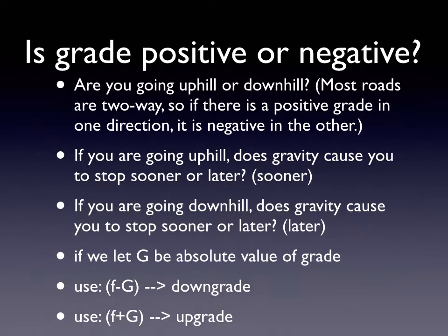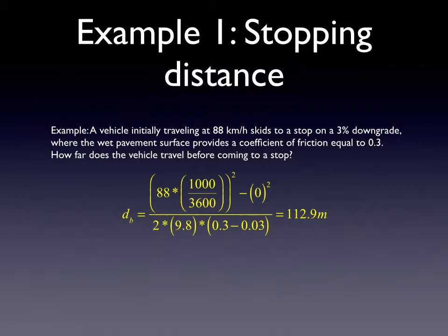We can use this to solve problems. So you're going 88 kilometers an hour, 55 miles an hour, and you want to skid to a stop on a 3% downgrade where you have a wet pavement surface giving you a coefficient of friction of 0.3. How far do you go before coming to a stop? Your initial speed is 88 km/h. We convert that to meters per second using 3600 seconds in an hour and 1000 meters per kilometer. Our end speed is 0, and we use 2 times 9.81 meters per second squared, our grade of 3%, and our coefficient of friction of 0.3. It's going to take you 112 meters to come to a stop. If the friction were greater you would come to a stop in a shorter distance. If the friction were less it would take you longer.